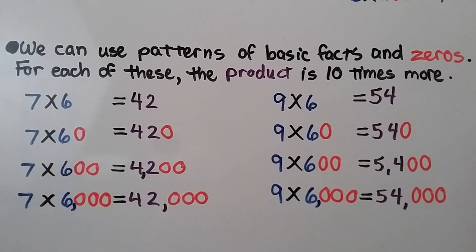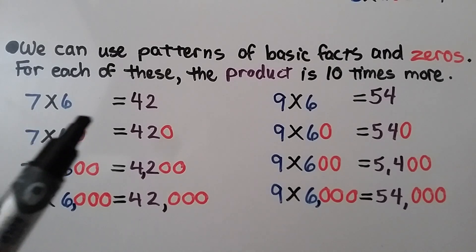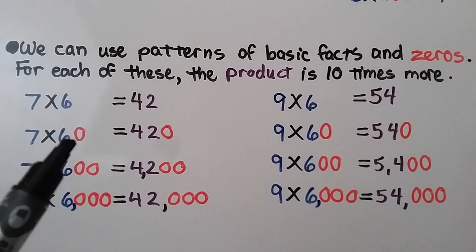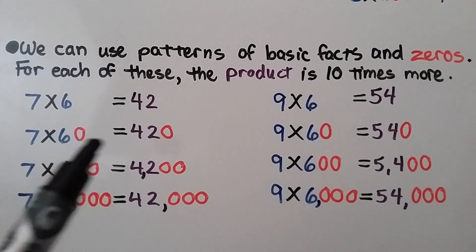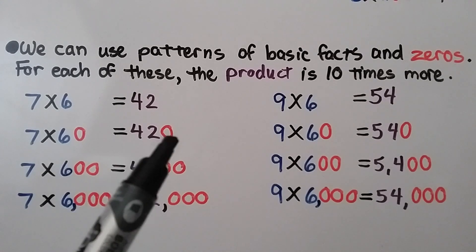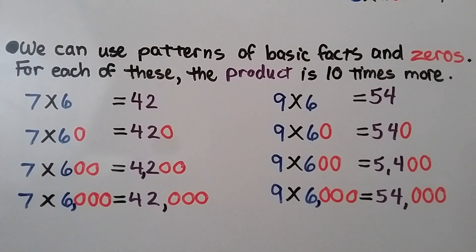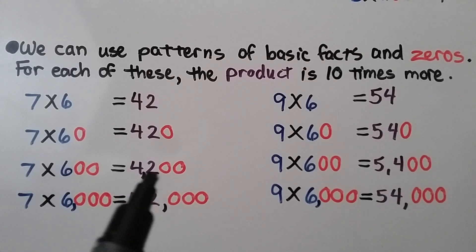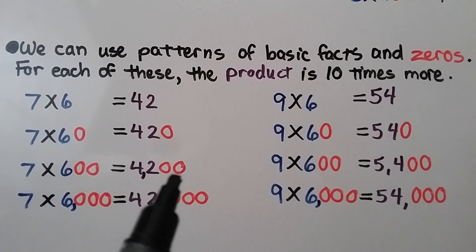We can use patterns of basic facts and zeros. For each of these, the product is 10 times more. We start with 7 times 6, which equals 42. For 7 times 60, there's one zero in the factors, so there's one zero in the product: 420. For 7 times 600, we have two zeros in the factors, so we have 42 with two zeros: 4,200.